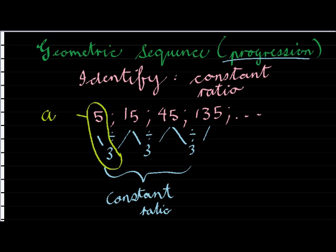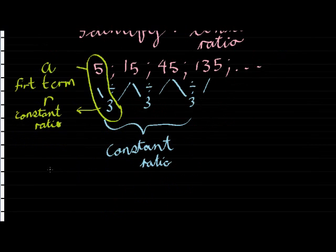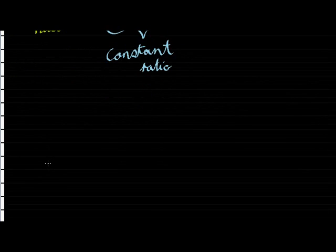If we look at the first two values in this diagram, this one is still my first term and it will take the value of a, the first or alpha term. And this 3 will take the value of r and be called the constant ratio.